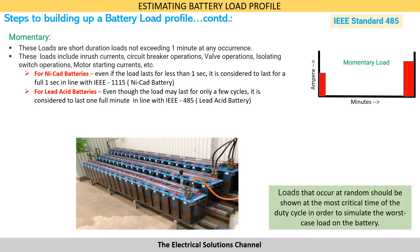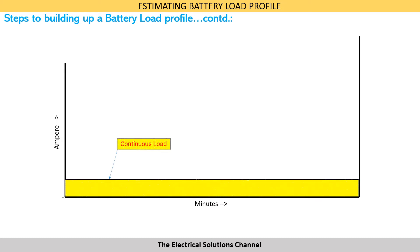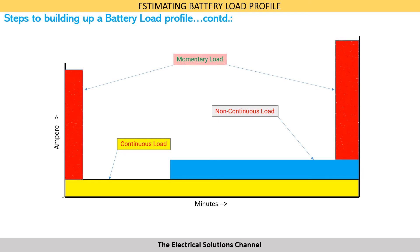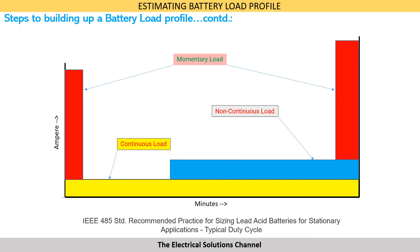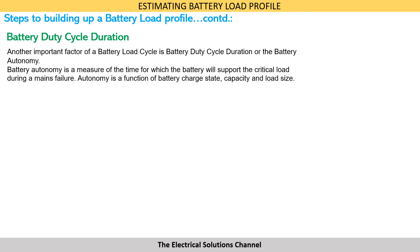Once the continuous, non-continuous, and momentary loads of a project have been estimated, combining all three gives us the battery load profile for that project. Another important factor of a battery load cycle is the battery duty cycle duration, or battery autonomy. Battery autonomy is a measure of the time for which the battery will support the critical loads during a mains failure, and is a function of the battery charge state, its capacity, and the load size.